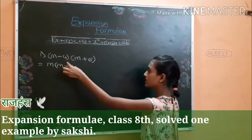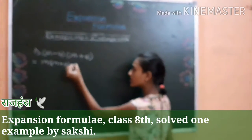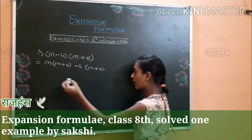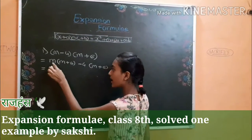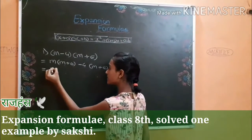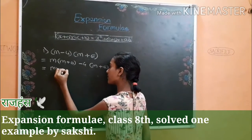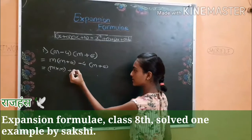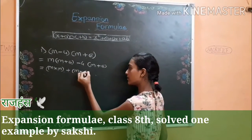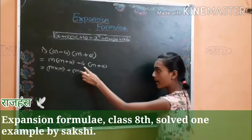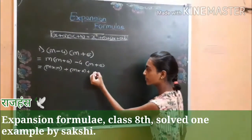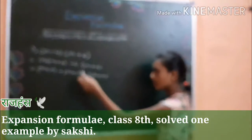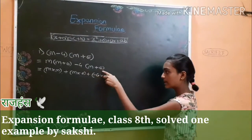Then minus 4 to m plus 6. Now multiply it. m multiply by m. Plus m multiply by 6. Plus minus 4 multiply by m. And minus 4 multiply by 6.